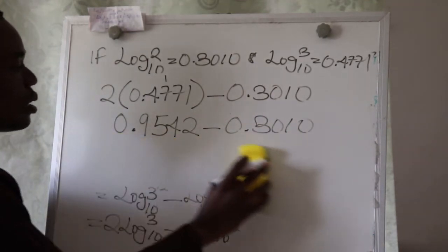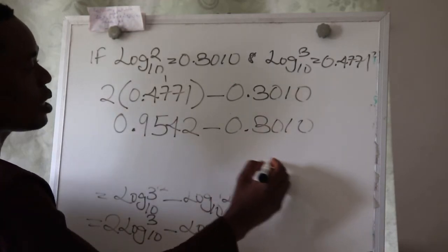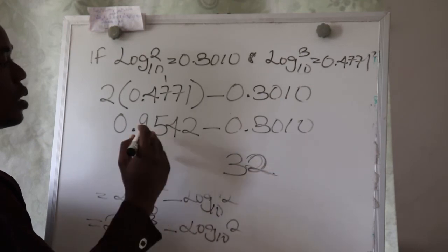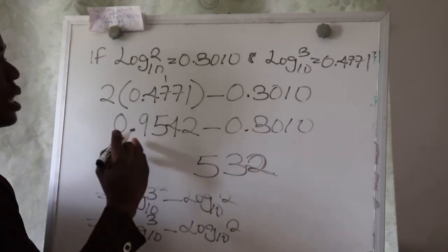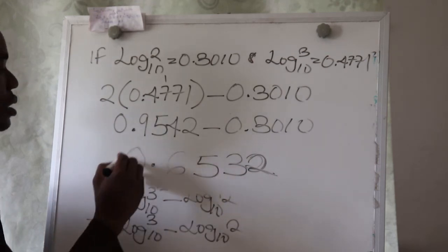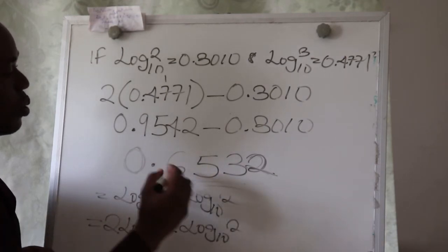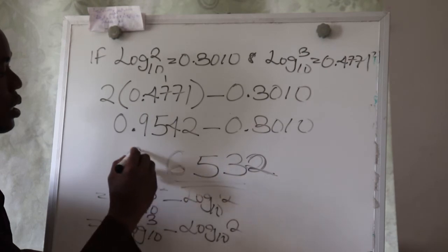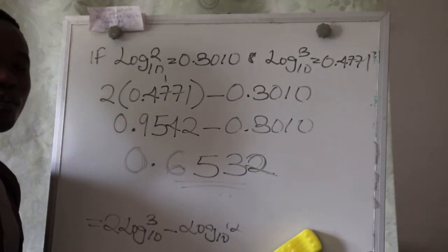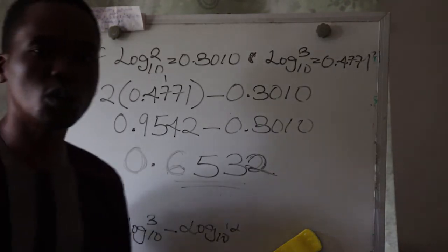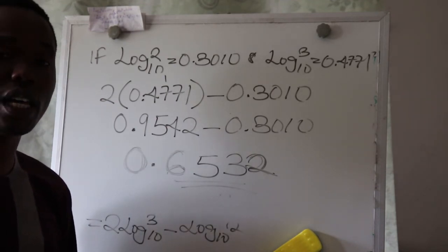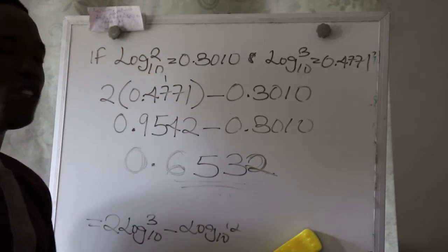When you subtract these two values: 2 minus 0 gives 2, 4 minus 1 gives 3, 5 minus 0 gives 5, and 9 minus 3 gives 6. So the solution to this question is 0.6532. You see that if you get to know the principles of solving this question, you can solve it within 30 seconds to two minutes at most.